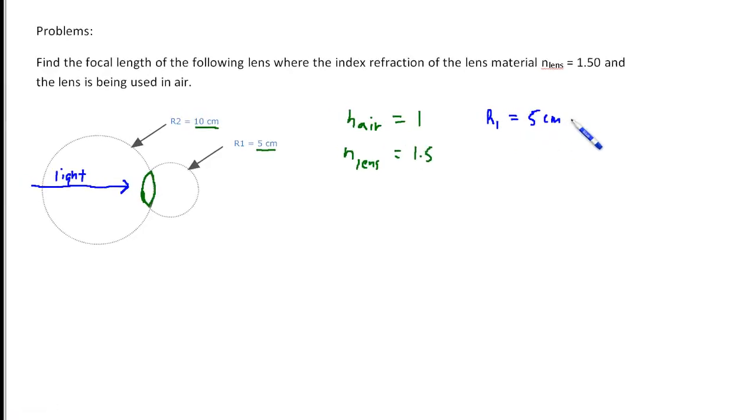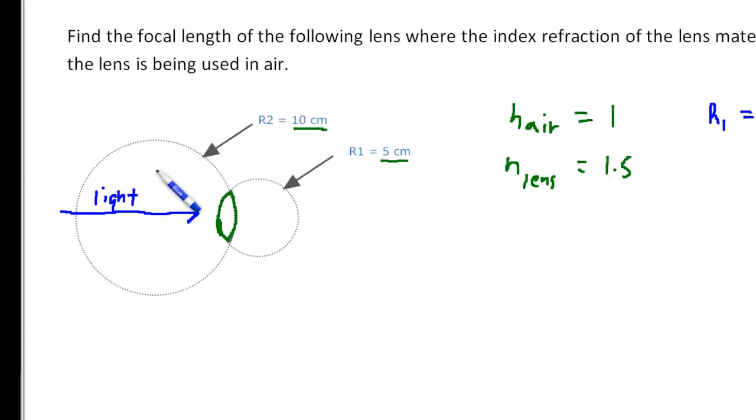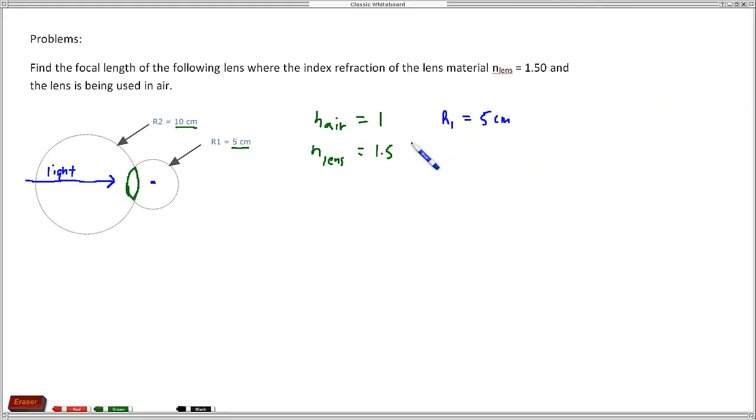So for R1, light's coming in, it hits the surface of the lens first, then it gets to the center of curvature for that particular surface which is here. It hits that second, so that means that this is a positive sign for this particular radius.